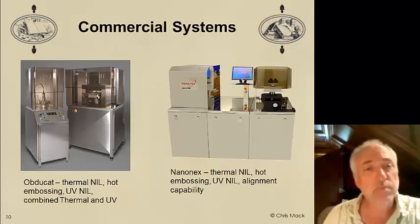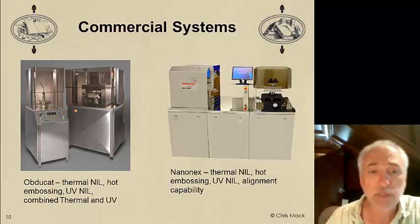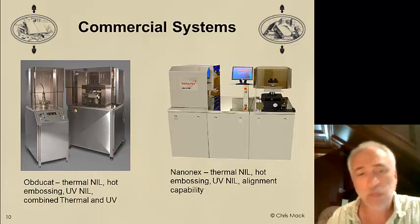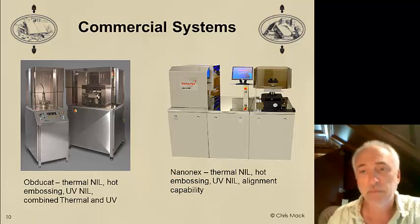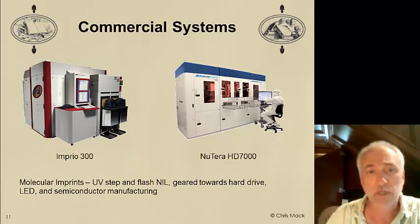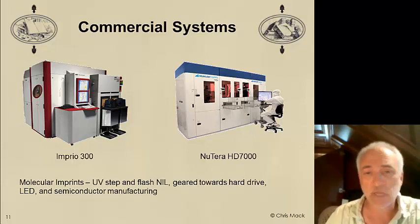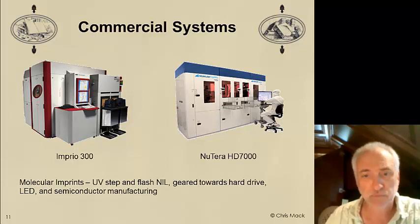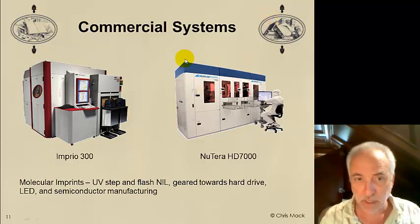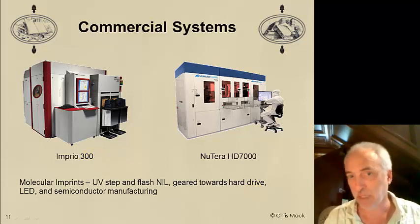There are quite a lot of commercial systems available to do nano imprint lithography. Some do thermal imprint — flexible R&D machines that can do thermal imprint, UV nano imprint, and combined thermal and UV. Then there are Molecular Imprints tools geared toward high-volume manufacturing, using the UV step-and-flash or jet-and-flash approach, with tools for the hard drive industry, semiconductor industry, LED manufacturing, and other applications.